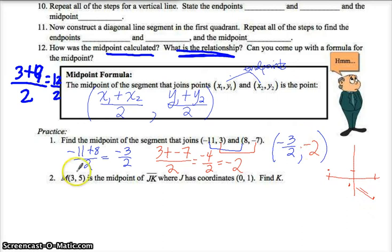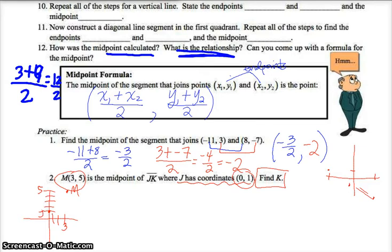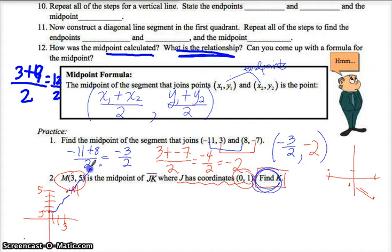What if I gave you the midpoint and I gave you one endpoint and you're trying to find the other endpoint? Let's look at that specifically. So point M is at 3, 5, and point J is at 0, 1. So J is here. Where does K have to be? If M is the midpoint, then it's halfway between the two endpoints. So K has to be up here in this space.